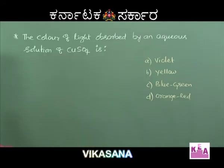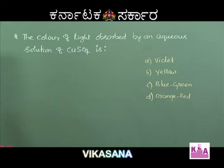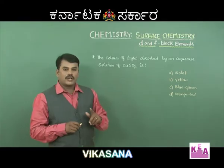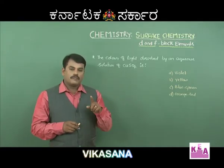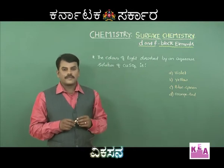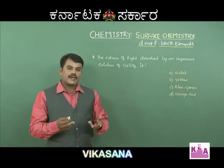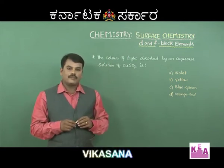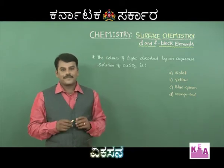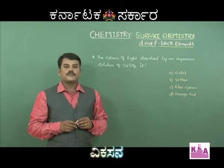The next question: what is the color of light absorbed by an aqueous solution of copper sulfate? D-block element compounds which possess partially filled d orbitals containing one or more unpaired electrons will exhibit color. The color shown by a solution is complementary to the color absorbed during d-d transition from t₂g to eɡ orbital.